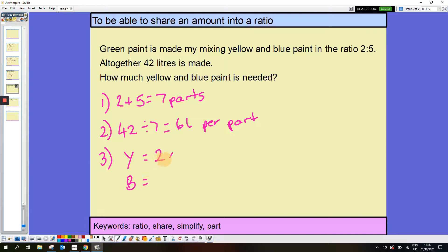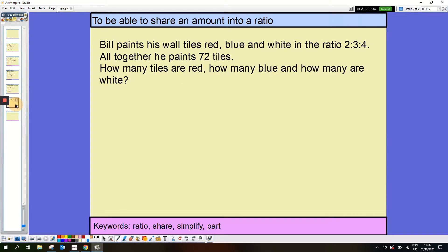And a final example. This is a 3 part ratio, but we work it out exactly the same. So step 1, I add all of the bits of the ratio together. So Bill paints his wall tiles red, blue and white in the ratio of 2 to 3 to 4. And he paints 72 tiles in total. How many red, how many blue, how many white? So 2 add 3 add 4 leaves me with 9. So that's 9 parts.